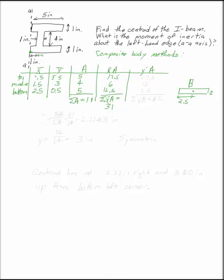We'll multiply the y bar column times a. 5.5 times 5 is 27.5. 3 times 4 is 12. 0.5 times 5 is 2.5. And my sum of the y bar a's is 42.